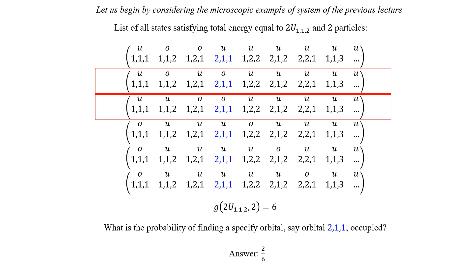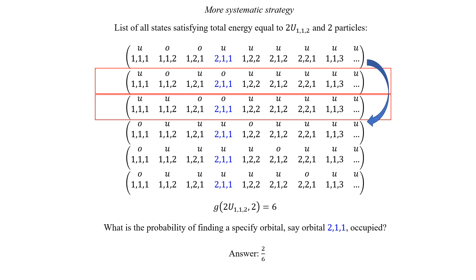In this example, our answer is very simple. Recall that with the fundamental assumption of statistical physics, we assume that all states are equally probable. We have six states; two of these states have the orbital of interest occupied. So the probability of finding the system in a state where orbital 211 is occupied is two out of six, just because we have two states that satisfy the condition — the orbital 211 occupied. It was very easy to find the answer because we could just count the states that have the orbital of interest occupied, since it's a microscopic system with only two particles.